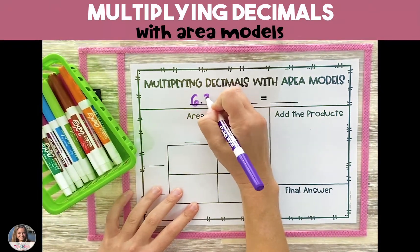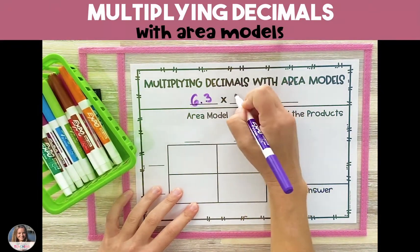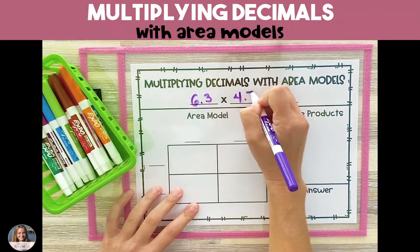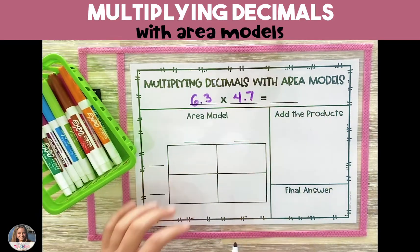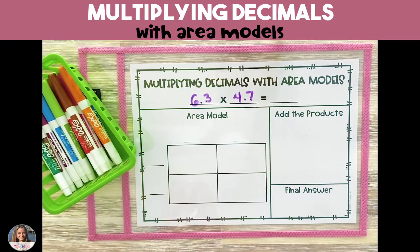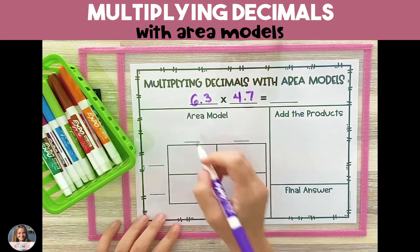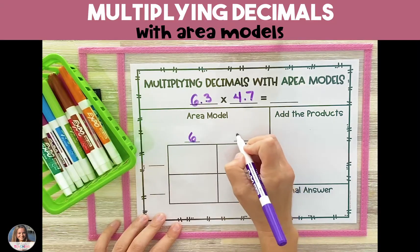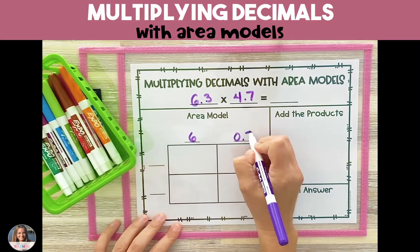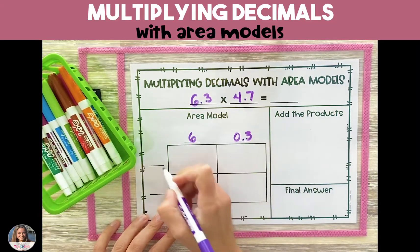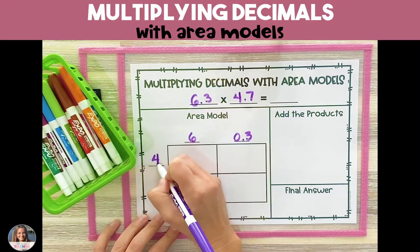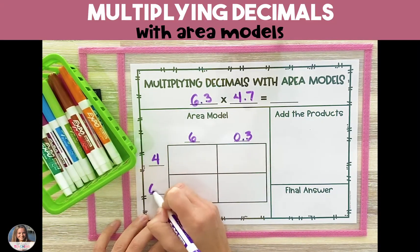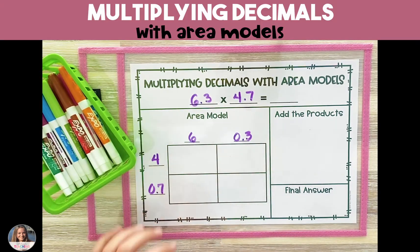To multiply decimals using area models, the first thing that we're going to do is take both of our factors and split them up by place value. Above the rectangle, we are going to separate 6 and 3 tenths, and on the side we will split 4 and 7 tenths.